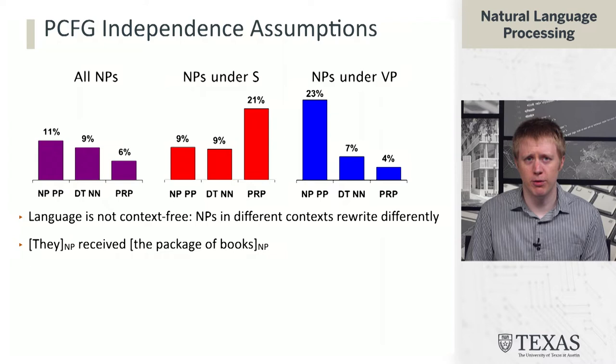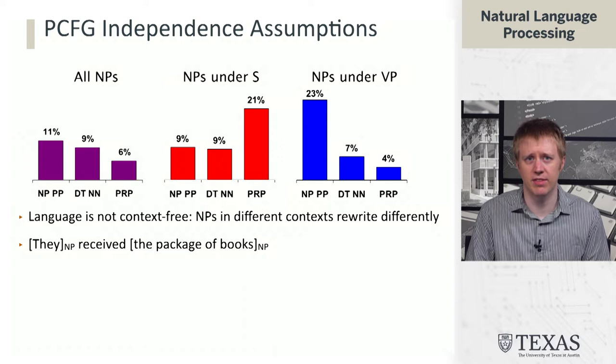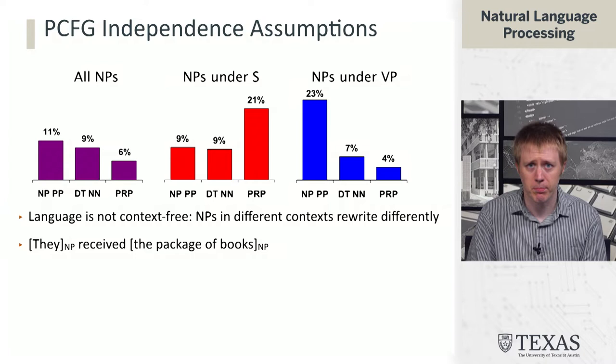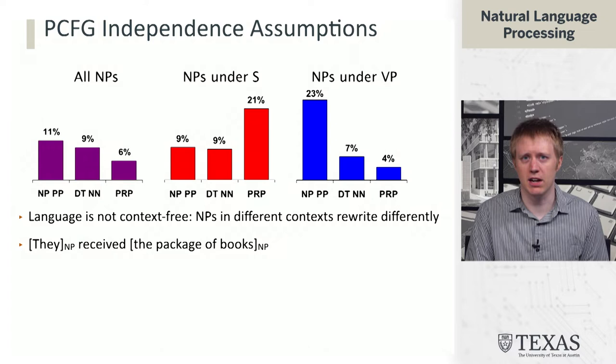What we're showing here is the distribution of rewrite rules for all NPs on the left. 11% of the time they rewrite as a noun phrase followed by a prepositional phrase — for example, 'the cake with icing.' 9% is a determiner and a noun like 'the cake,' and 6% of the time is a personal pronoun. But when an NP is occurring under the S symbol, meaning it's probably the subject of a verb, it's 21% of the time going to be a personal pronoun, but under a verb phrase that's only true 4% of the time. This represents the fact that language is really not context-free — NPs in different positions should be handled differently.